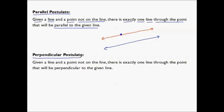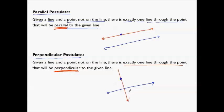The perpendicular postulate is very similar. We're given a line and a point not on the line, but this time we say there is exactly one line through that point that will be perpendicular to the given line — one exact way that I can draw a line that is perpendicular.